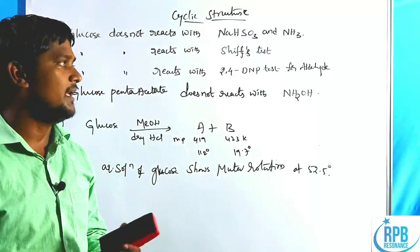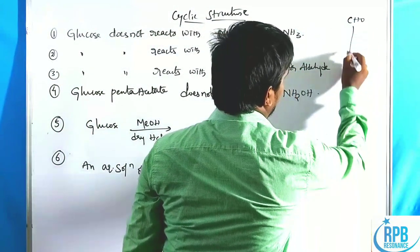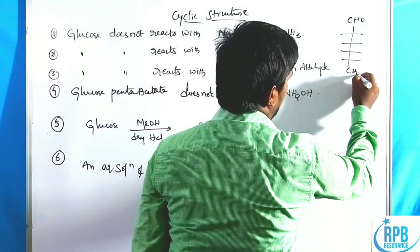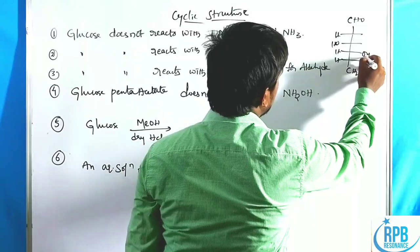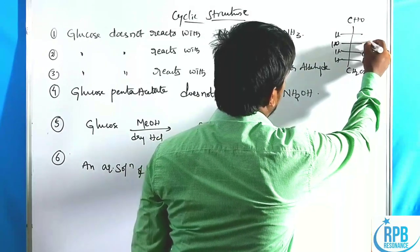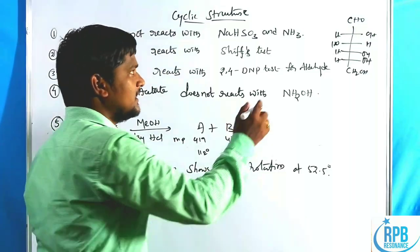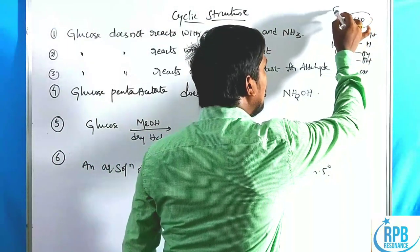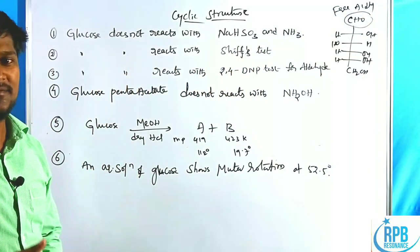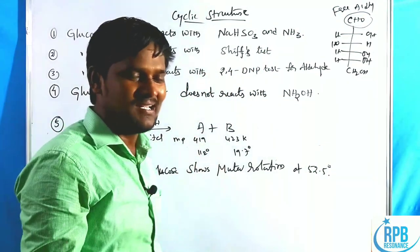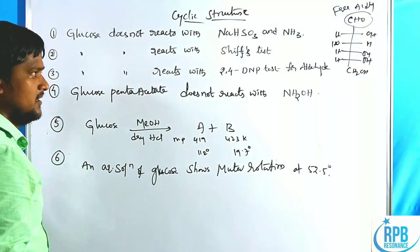The open chain structure of glucose indicates that it has a free aldehyde group. However, some reactions do not use the free aldehyde reactions of glucose. Let us discuss those reagents which do not give the free aldehyde test of the glucose moiety.